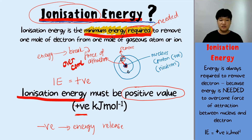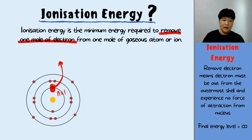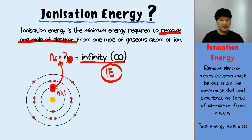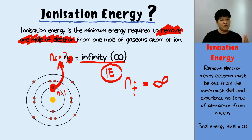Always remember, ionization energy must always be positive. When we remove one mole of electron from the gaseous atom, we move the electron out of the energy level. If the electron starts at N equals 1 and we remove it out of the energy level, N_final will be infinity. To calculate ionization energy, N_final must always be infinity, because removing the electron means it is out of the energy level — the furthest away.